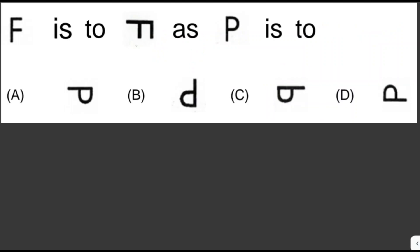Letter F is turned ninety degrees clockwise. Originally it looks like this, and the result is like this when turned ninety degrees clockwise. What will happen to letter P when it is turned ninety degrees clockwise? It should be letter A — P would look like this.